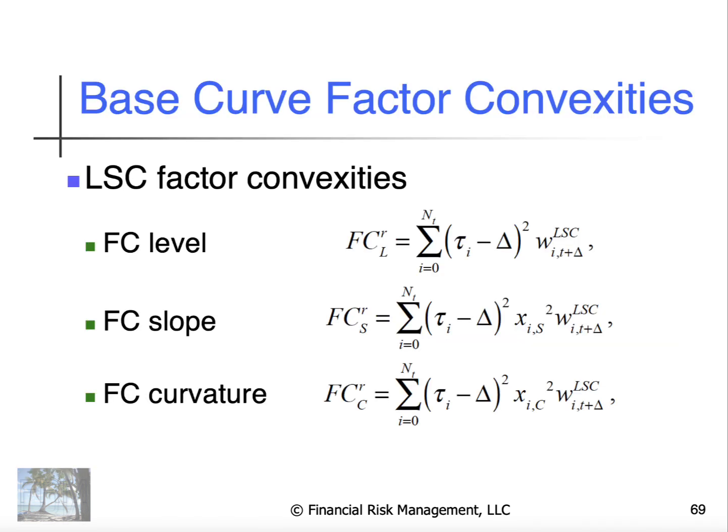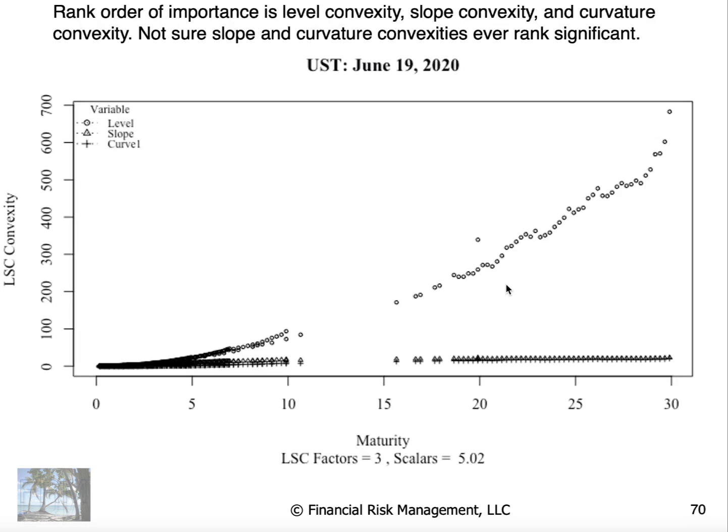Factor convexity is the same in general analysis except for this is squared and the weights are squared. And so, again, we have level factor convexity is very high relative to slope and curvature. Hence, most likely, you never have to worry about those.